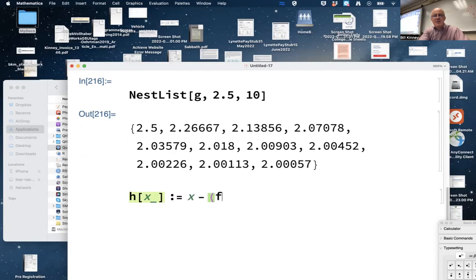f(x) times f prime of x, divide by f prime of x squared minus f(x) times f double prime of x.